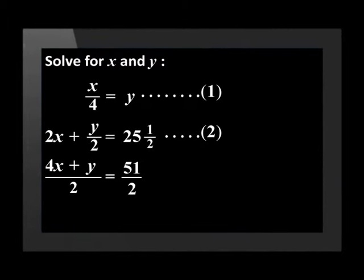We will call the other equation equation 2. Before substituting equation 1 into equation 2 we can simplify equation 2 by finding a lowest common denominator or LCD of 2 and getting rid of the fractions. On the left we get 4x plus y over 2. And we can write 25 and a half as an improper fraction of 51 over 2 on the right. Then we drop the denominator to just get 4x plus y equals 51. Do you see that the second equation is easier to work with since we got rid of the fractions first?